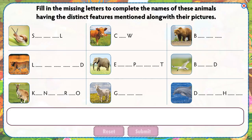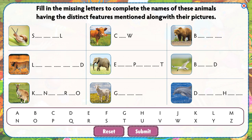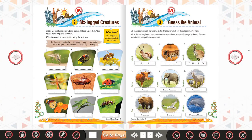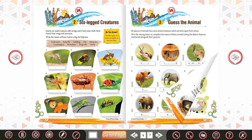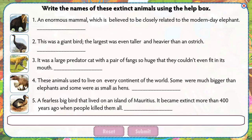Fill in the missing letters to complete the names of these animals having the distinct features mentioned along with their pictures. Write the names of these extinct animals using the help box.